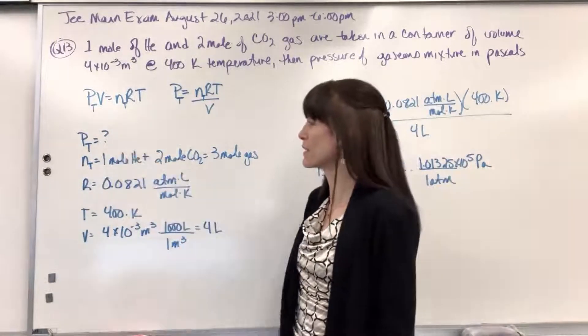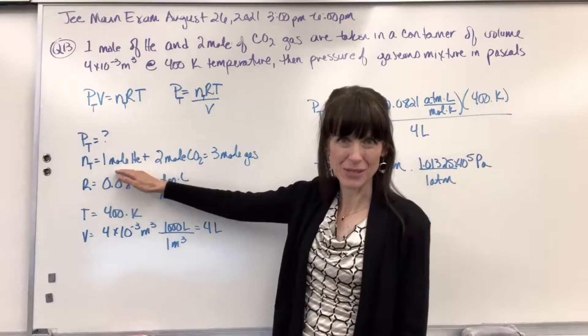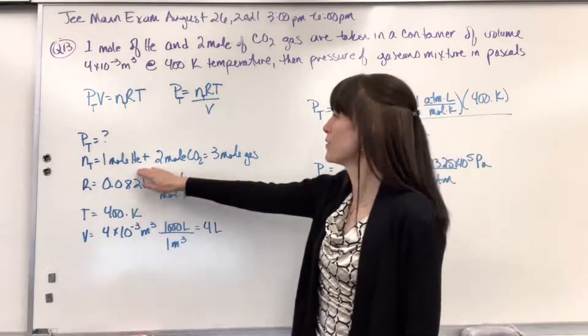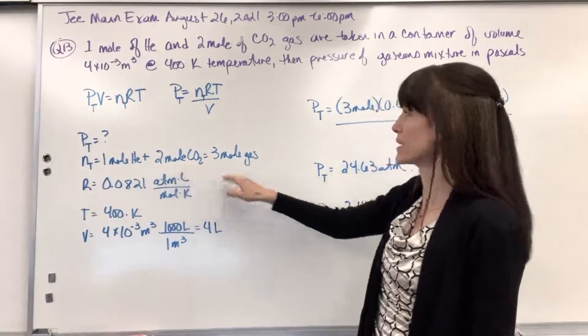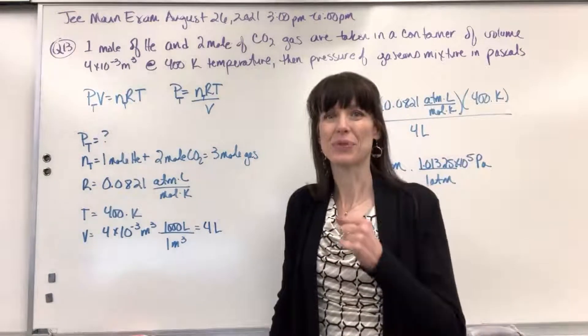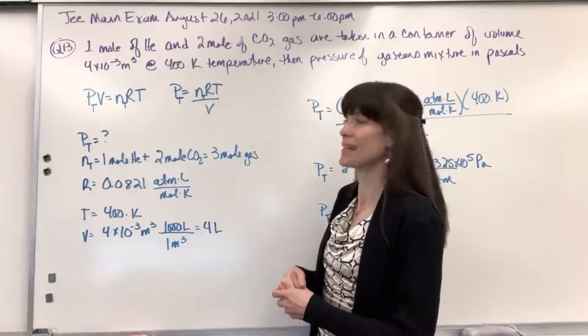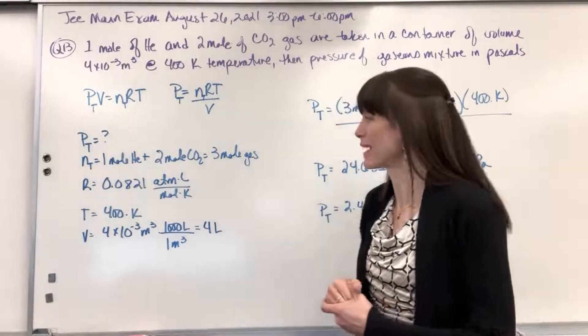Our total pressure, that's what we're looking for. Look what I did for my total moles. I just added the gas moles together. One mole of helium plus two moles of carbon dioxide gives us a total of three moles of gas. Our gas constant, 0.0821 atm times liter divided by mole times kelvin. We were at 400 kelvin...